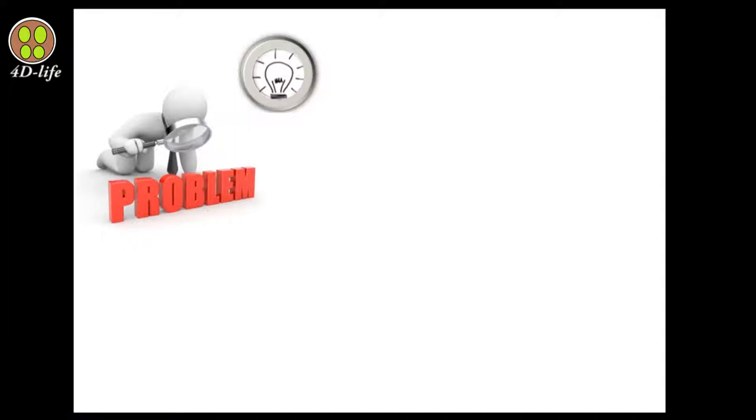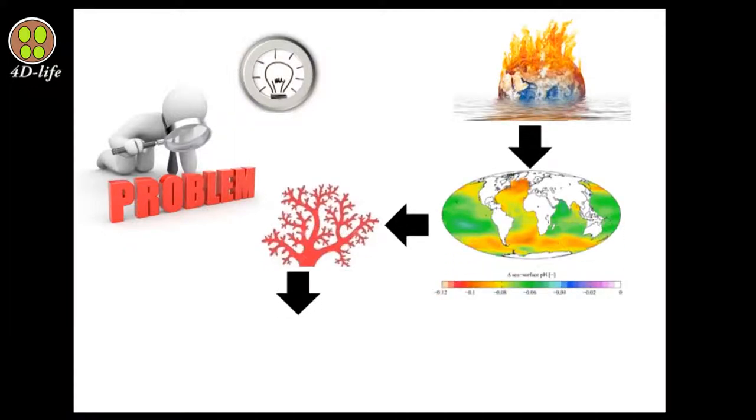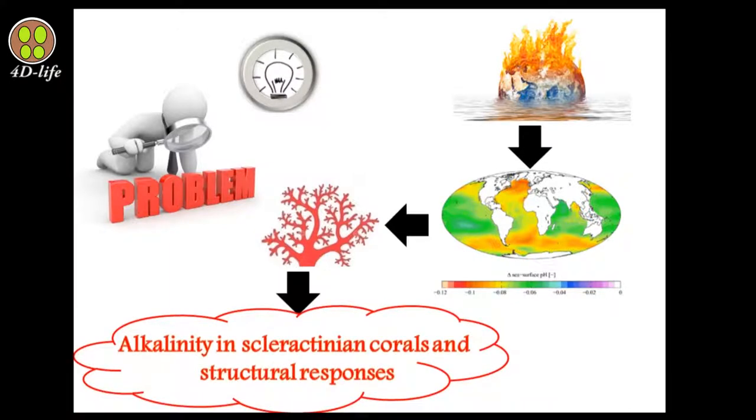The problem is global warming and ocean acidification. In order to resolve the problem, we need to understand it. We need to have good information about global warming scenarios, and we need to understand marine animals, especially coral reef and scleractinian coral response to ocean acidification and global warming. Scleractinian coral structure response to alkalinity is one of the missing keys that we are going to find the answer as much as possible.